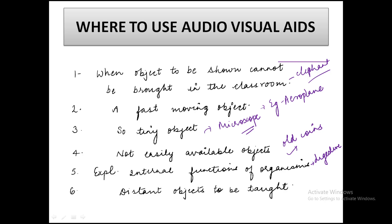For distant objects to be taught — for example, the culture and dress of different countries — we cannot bring that country here, but we can show different types of videos or organise a fancy dress competition about that culture. These are the situations where we should use audio-visual aids in our classroom teaching.